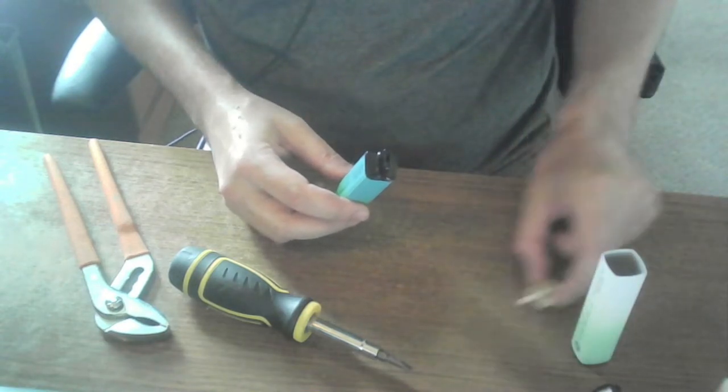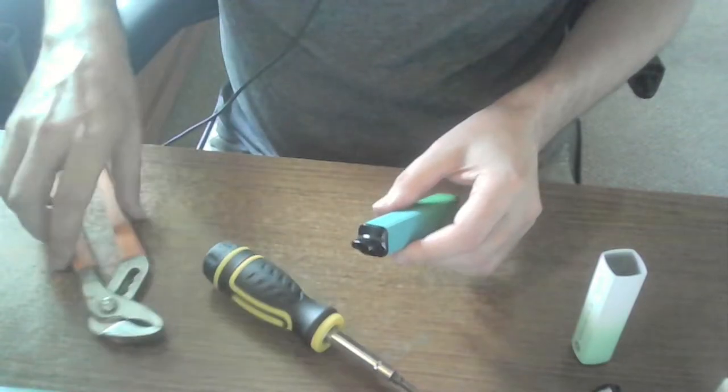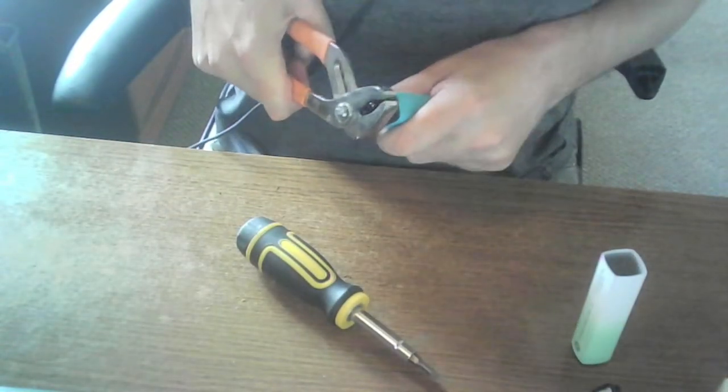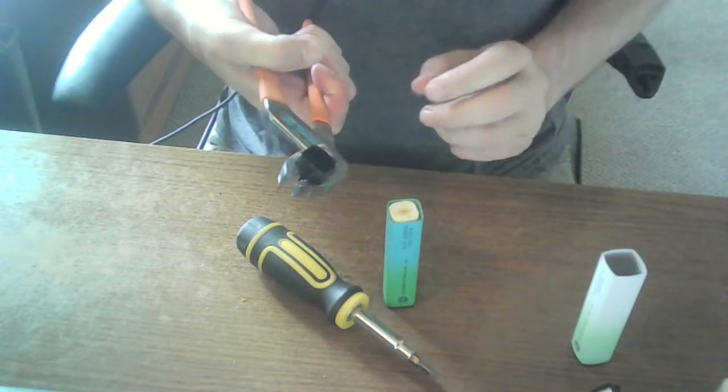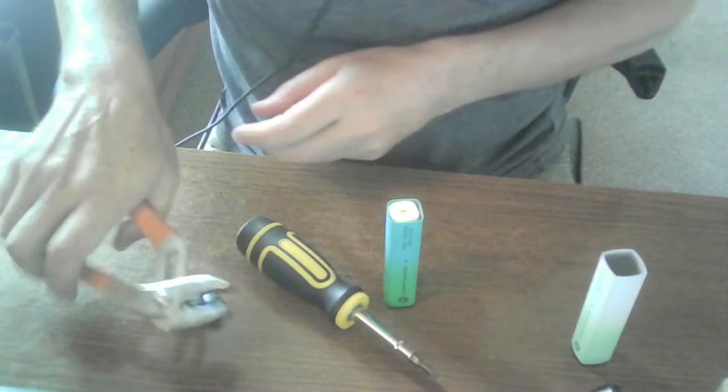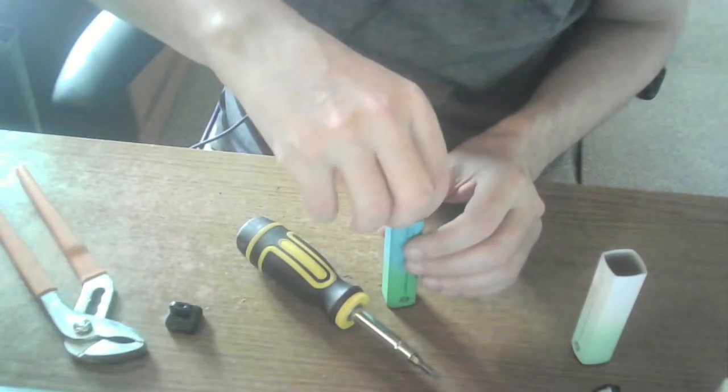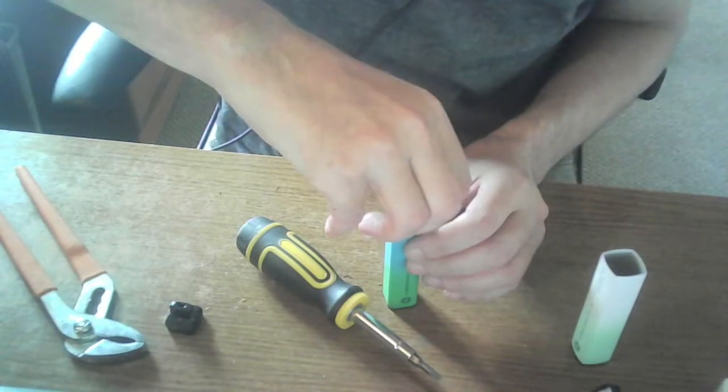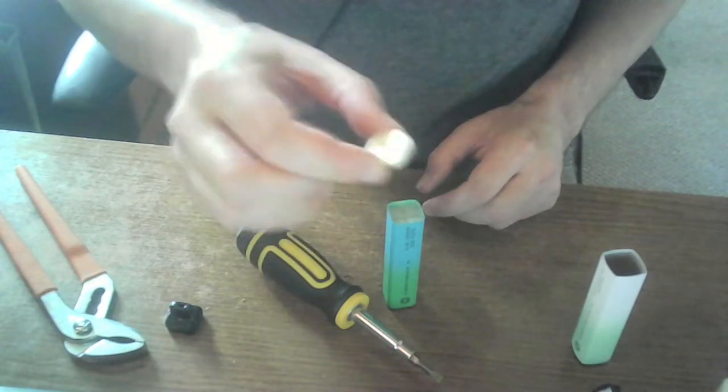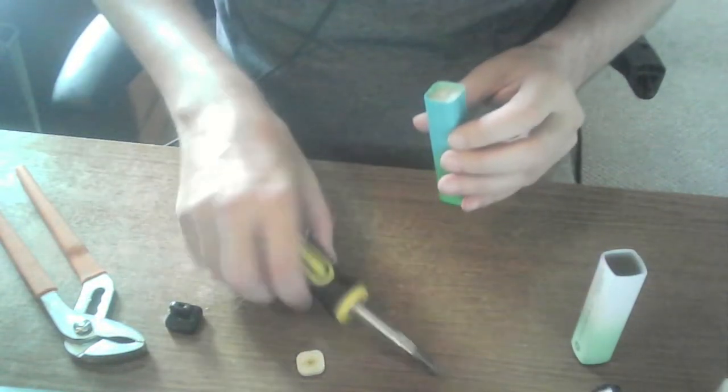All right, now move on to our non-rechargeable. Same again. Monkey pliers, get it off. Boom. So it's slightly different, this. There's no sort of plastic seal on this. It's a bit weird. There's this sort of foam, little foam mini seal there on top, and there is actually another bit of plastic down there.